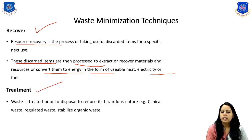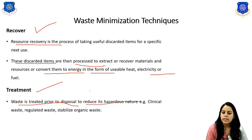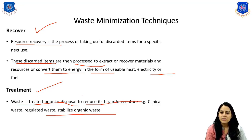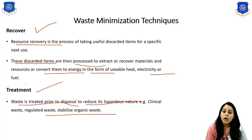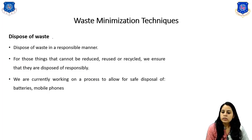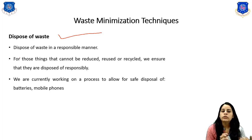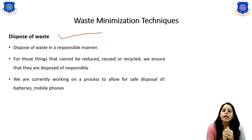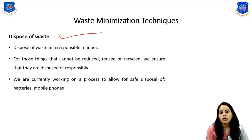The next technique is treatment. Waste is treated prior to disposal to reduce its hazardous nature — for example, clinical waste, regulated waste, or stabilized organic waste. There are various treatment methods including physical, chemical, and organic treatment. The last technique is responsible disposal — for those things that cannot be reduced, reused, or recycled. We ensure they are disposed of responsibly, such as safe disposal processes currently being developed for batteries and mobile phones.